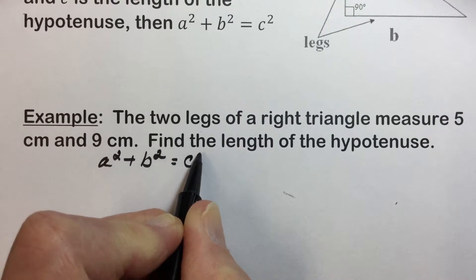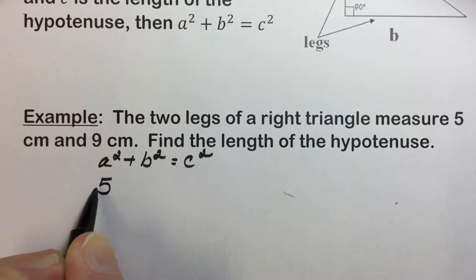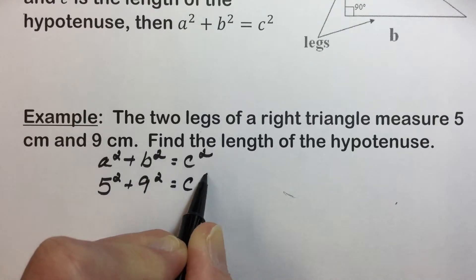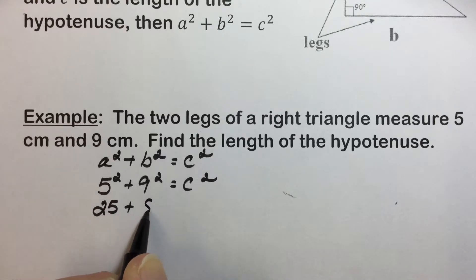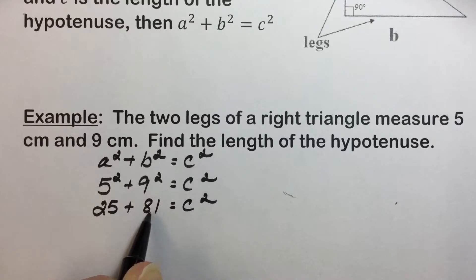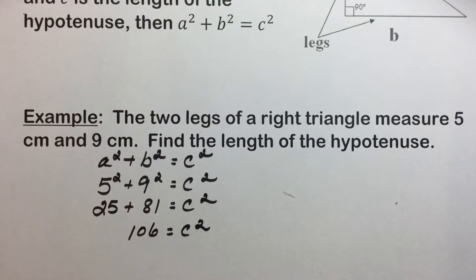The sum of the legs squared is equal to the hypotenuse squared. Putting 5 in place of one leg length and 9 in place of the other, and simplifying: 5 squared, or 5 times 5, is 25; 9 squared is 81. The sum of those two numbers, 106, is equal to C squared.